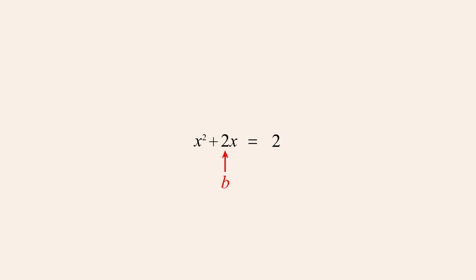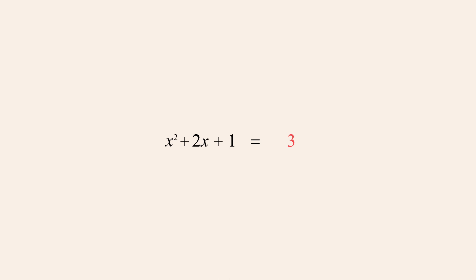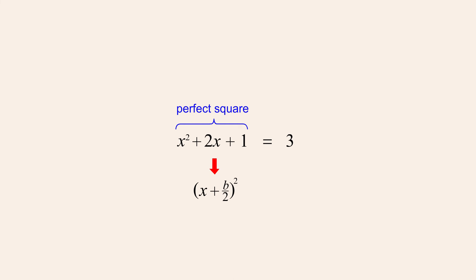And then add b over 2-squared to both sides. Since in this example b is 2, b over 2-squared is 2 over 2-squared, or 1. The quadratic expression on the left is now a perfect square that, as we saw, can be written as x plus b over 2 quantity squared. And since in this example b is 2, this perfect square quadratic can be written as x plus 1 quantity squared.